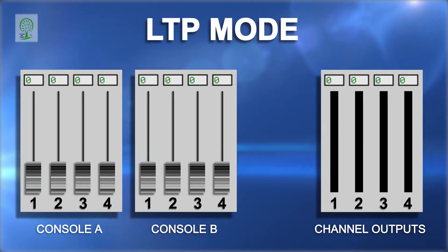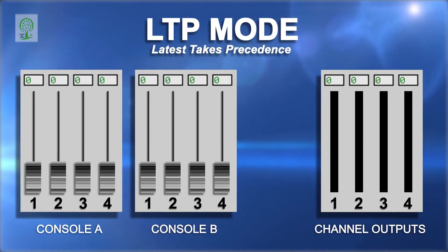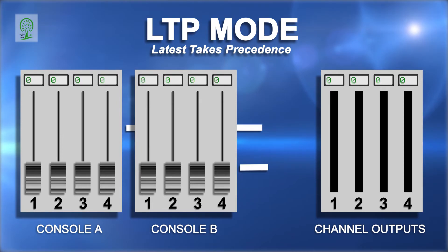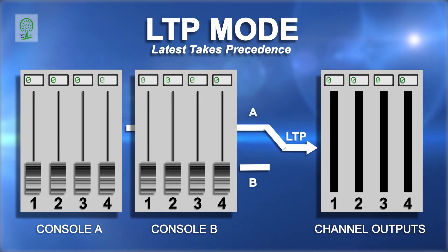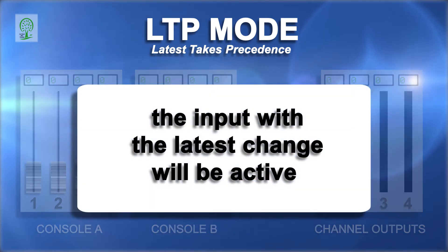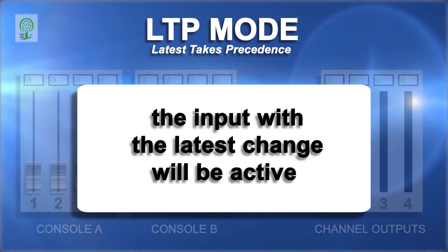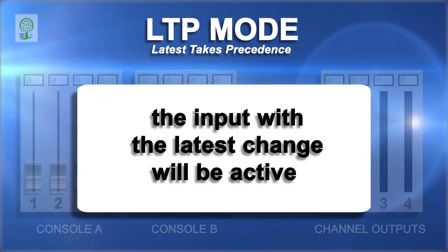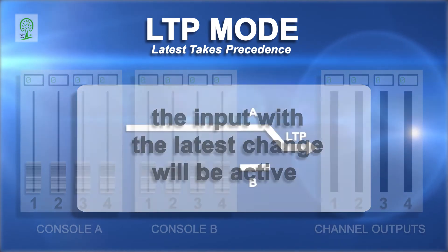In the LTP mode, or latest takes precedence, only one of the inputs is active at any time. The last or latest DMX level change on any channel of A or B input will be switched to and sent to the output.